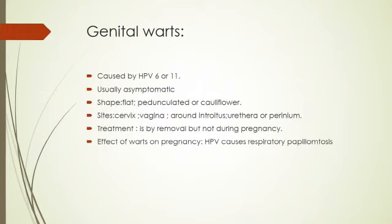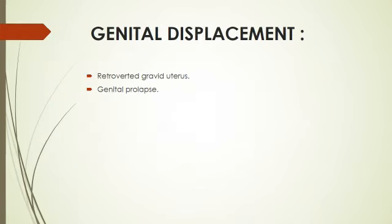Genital warts are caused by human papillomavirus (HPV) types 6 or 11, usually asymptomatic, in the shape of flat, pedunculated, or cauliflower-shaped warts on the cervix, vagina, around the introitus, urethra, or perineum. Treatment is by removal of the warts, but not during pregnancy as recurrence will definitely occur. HPV can cause respiratory papillomatosis in the neonate through an unknown mechanism.